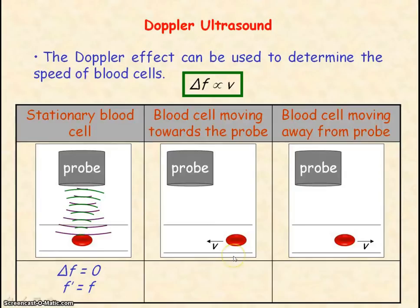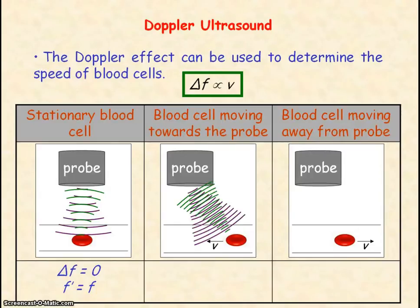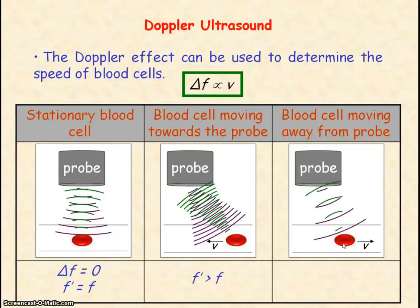If the blood cell is moving towards the ultrasound probe, then the probe will receive ultrasound of a higher frequency than the original frequency emitted. However, if the blood cell is moving away from the probe, then the probe will receive ultrasound of a lower frequency than the original frequency emitted.